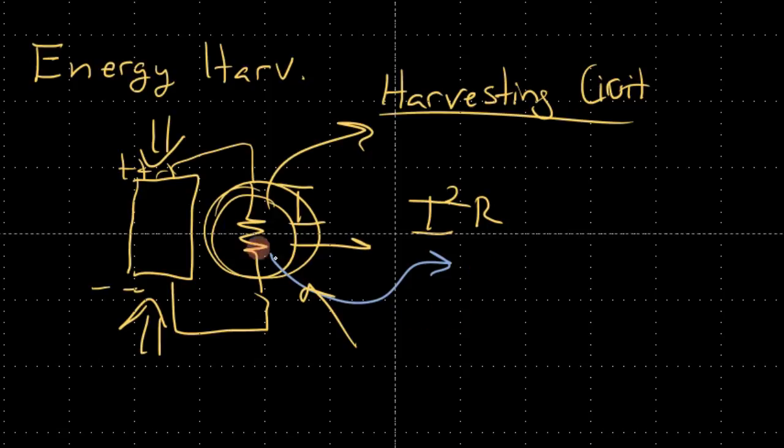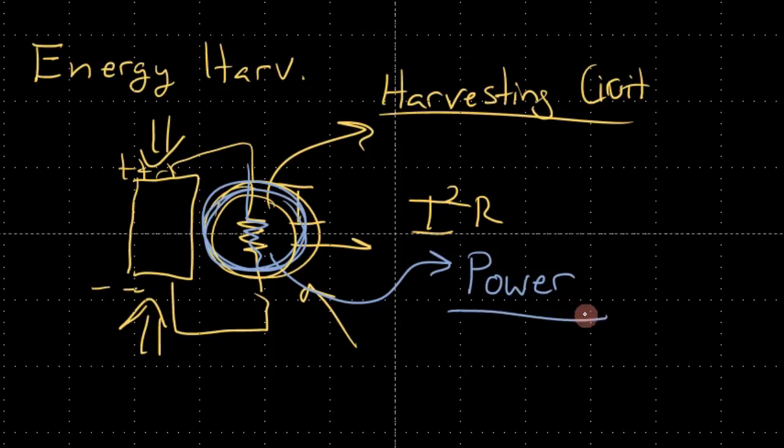So we're going to assume that this battery charger or energy harvester can be modeled as a simple resistor, and we're going to use that to understand how much power we can extract from it. We're going to assume that the power dissipated in the resistor is actually that power which is going into charging a battery, for example, or running another external device.